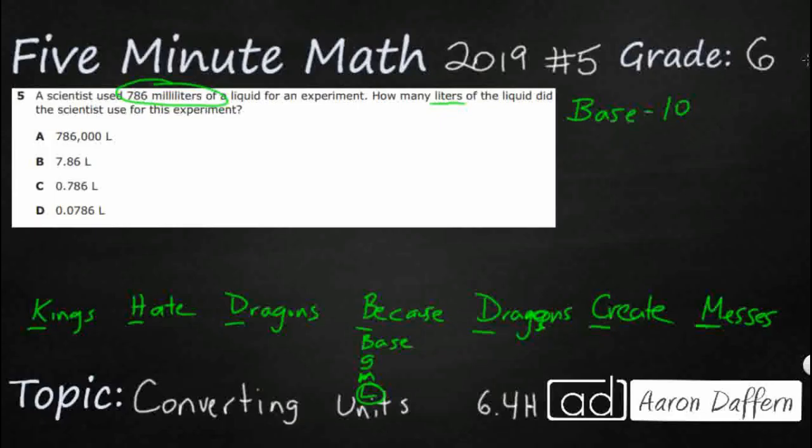So moving to the right from our liters, we have deciliters, we can put DL, and then we've got centiliters and milliliters. Notice that when we're dealing with liters, we use a capital L. We don't want that lowercase L to look like an I. When we're dealing with grams or meters, it's a lowercase.